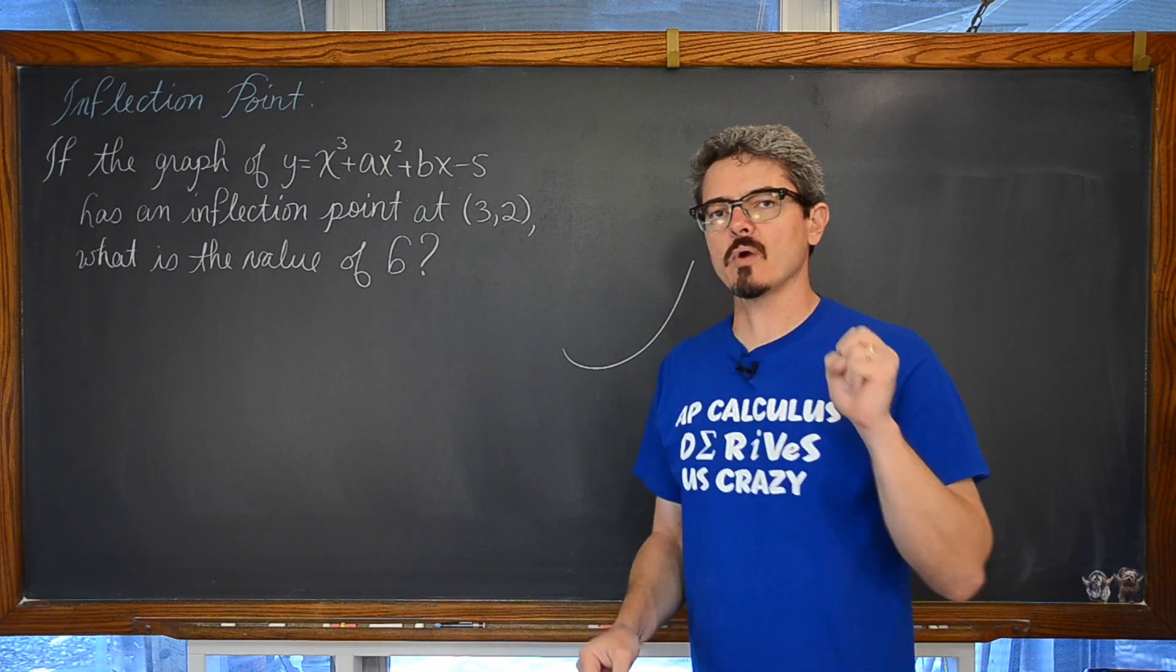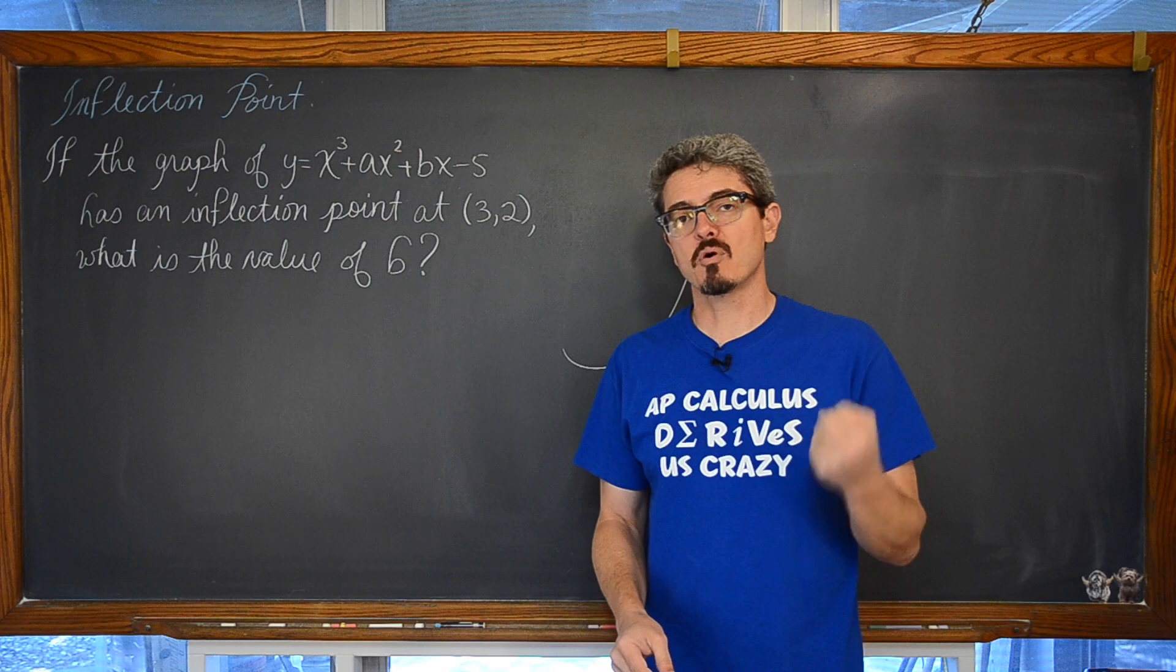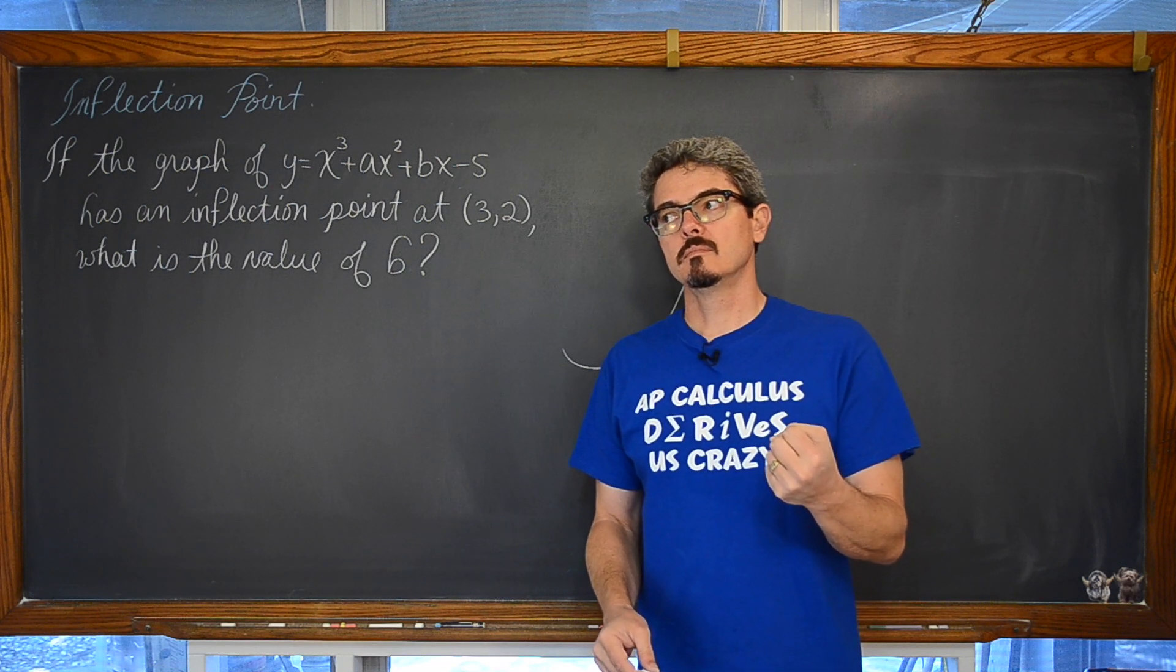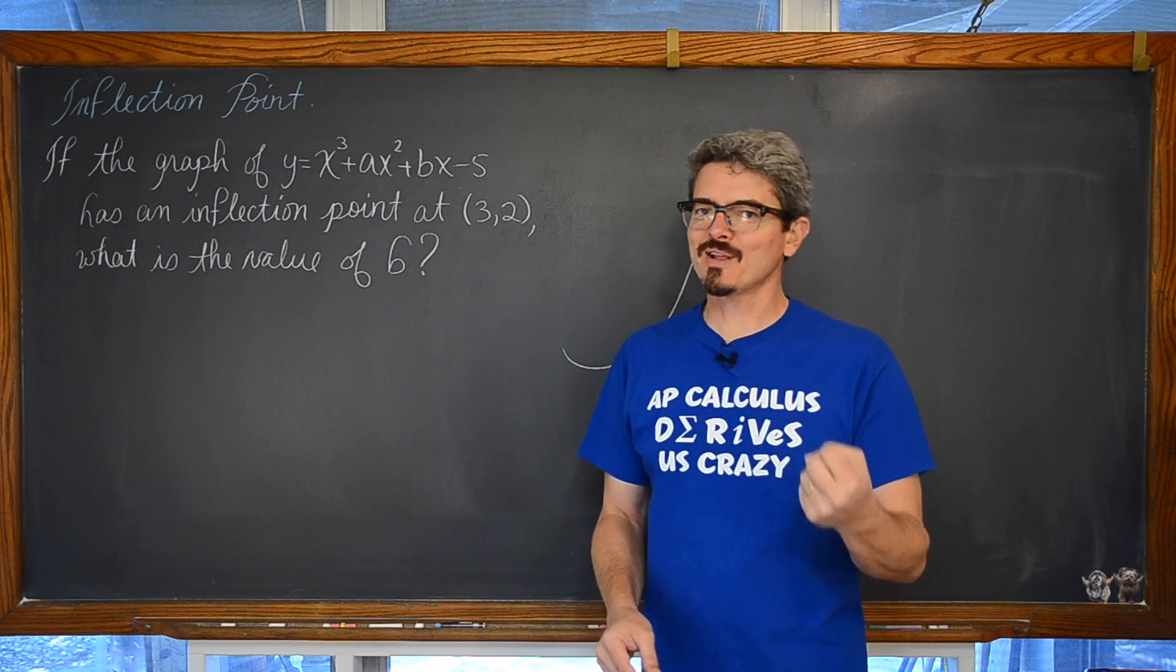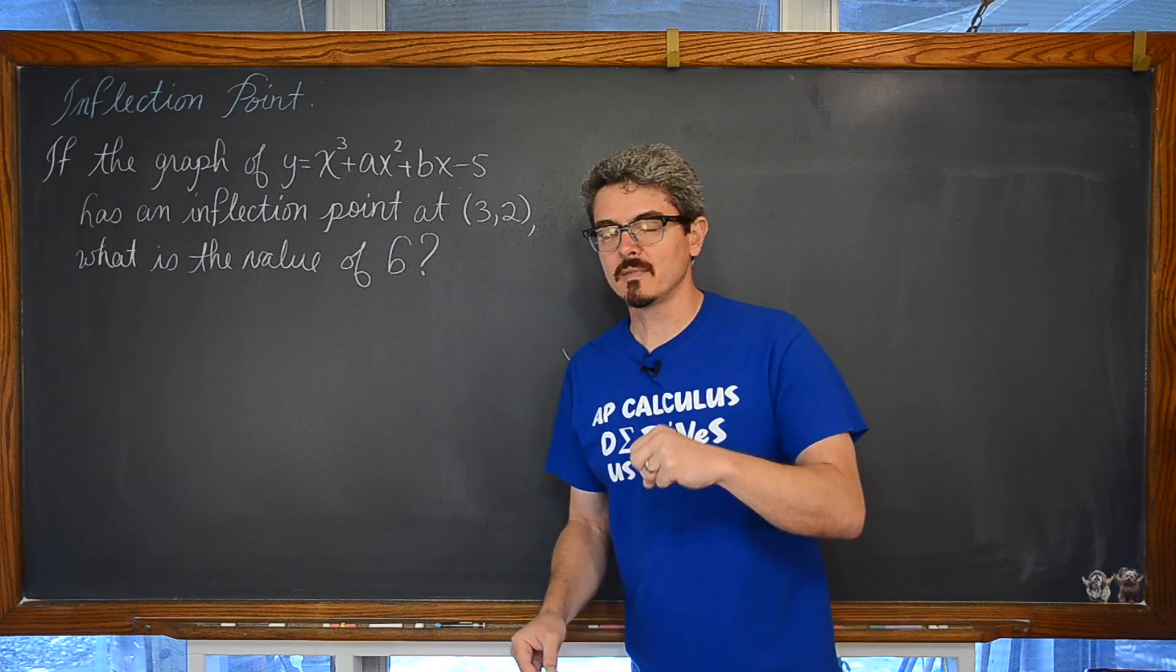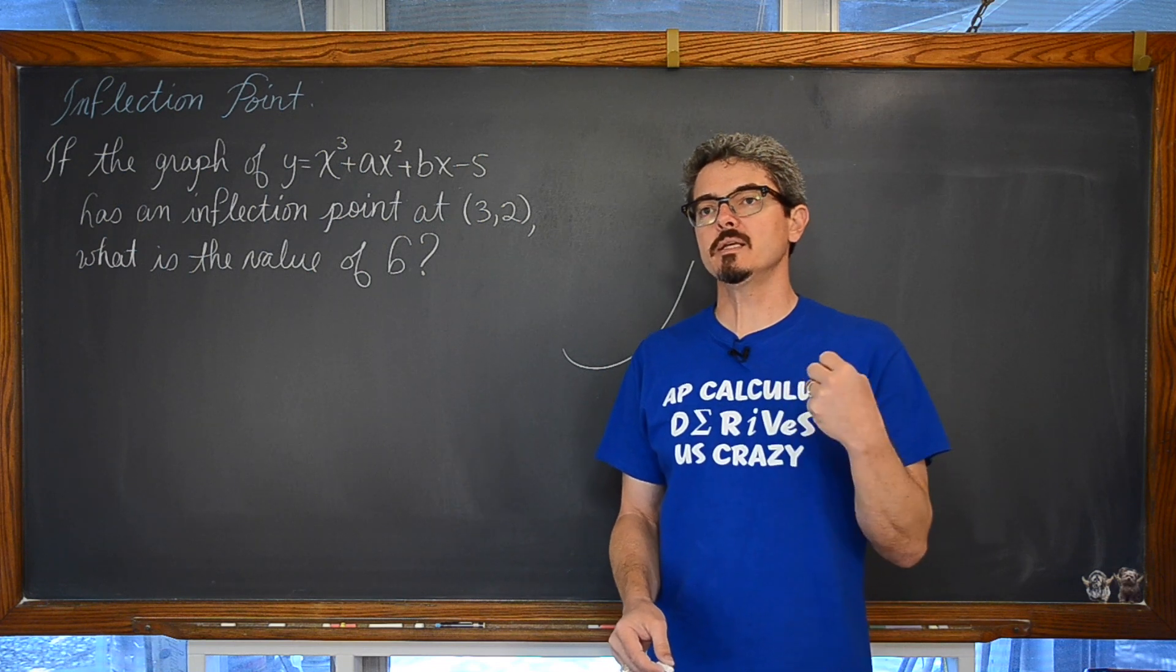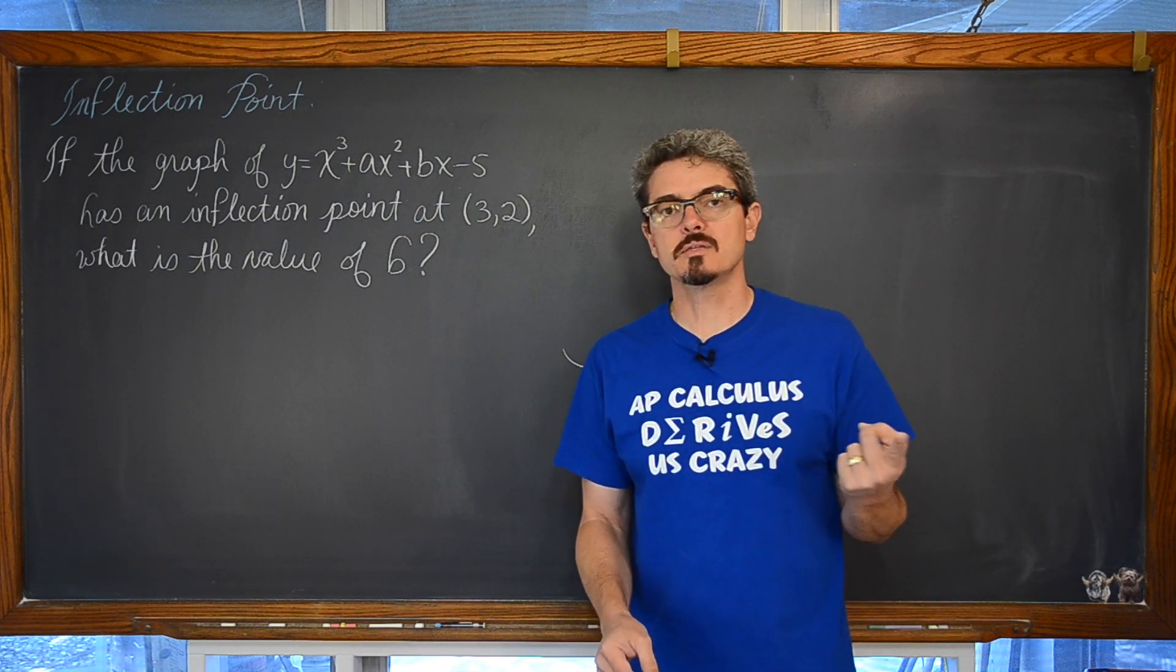But what is f double prime being greater than zero tell us about f prime? f double prime is the slope of f prime, and if f double prime is greater than zero, then the slope of f prime is increasing.